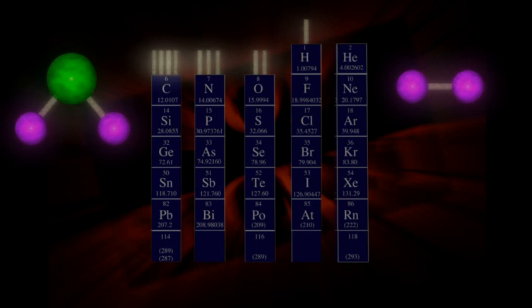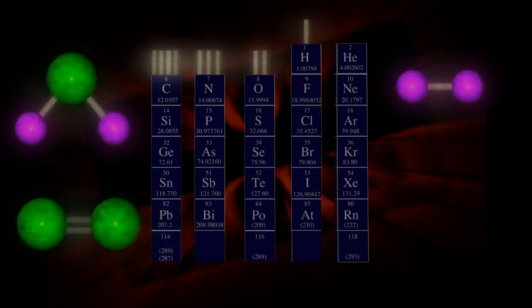Now there can be double bonds as well. Since oxygen wants to make two bonds, it can get together with another oxygen atom in a way that uses both available bondings. This oxygen molecule satisfies the bonding urge of both atoms, and the resulting double bond is very strong.